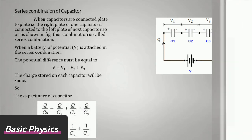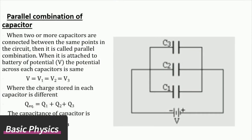Parallel combination of capacitor: When two or more capacitors are connected between the same points in the circuit, it is called parallel combination. When it is attached to battery of potential V, the potential across each capacitor is same: V = V1 = V2 = V3.